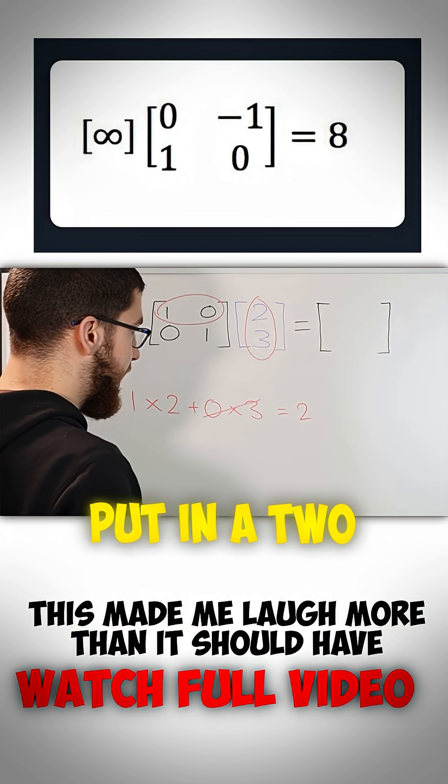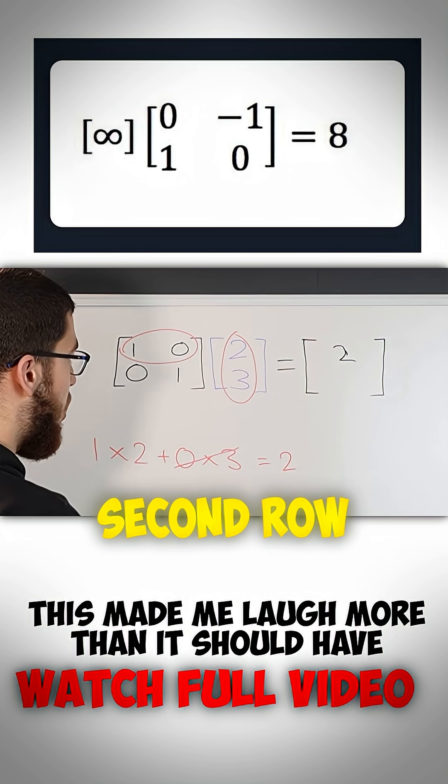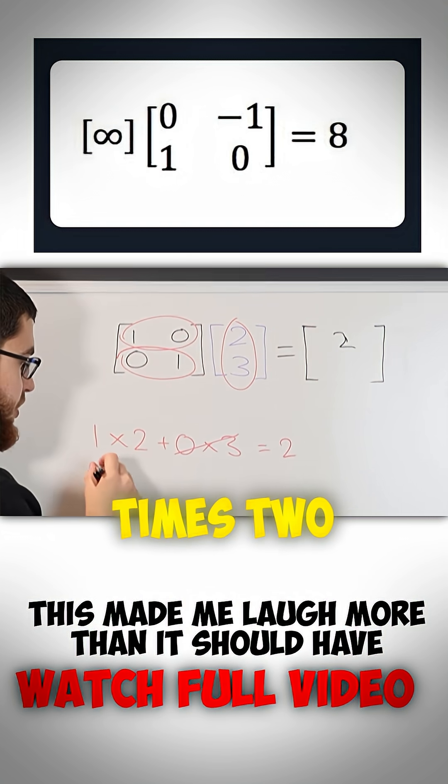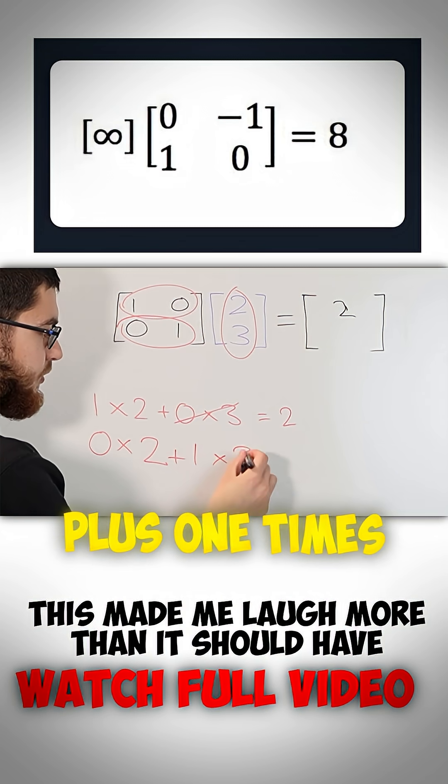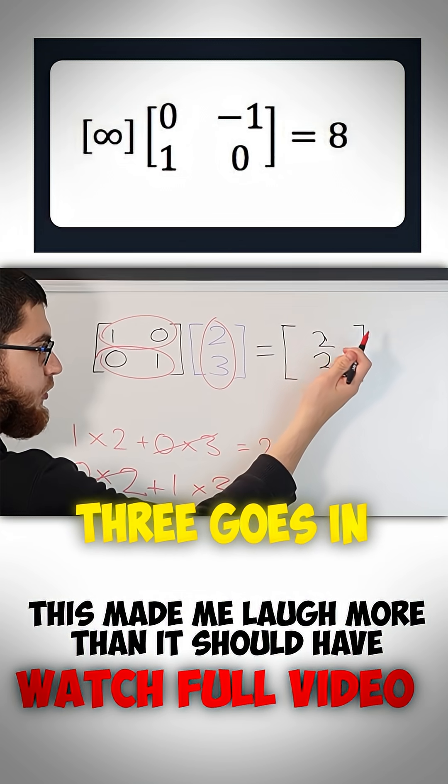So in here we put in a 2, and then next we've got the second row multiplied by the column again. So in this case we've got 0 times 2 plus 1 times 3, which is equal to 3. So 3 goes in here.